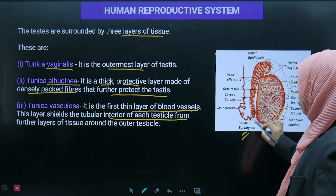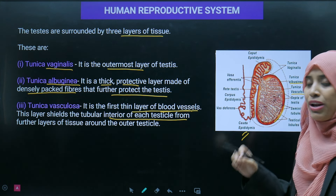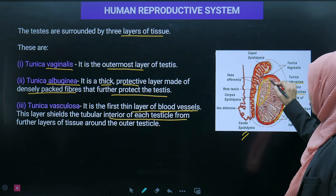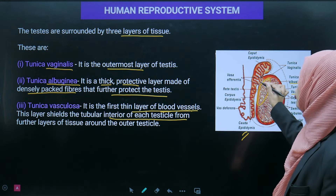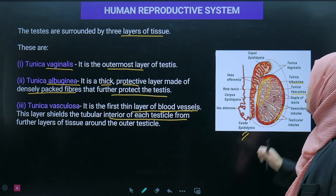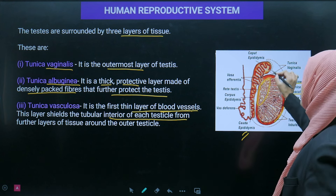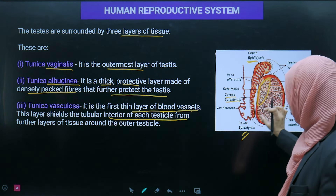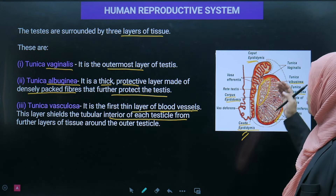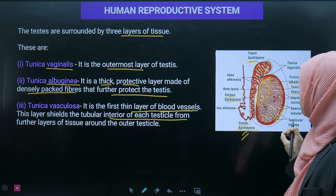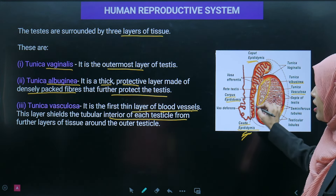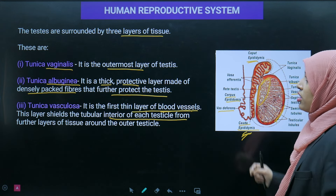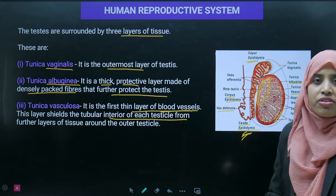Looking at the diagram, we can see the epididymis, where many seminiferous tubules open collectively — this region is known as rete testis. All the tubules open together and lead to the epididymis. The epididymis has three parts: the head (caput epididymis), the middle part (corpus epididymis), and the tail (cauda epididymis), which finally connects to the vas deferens.